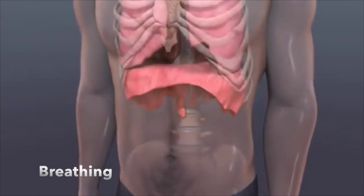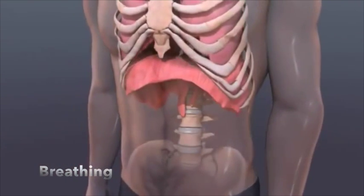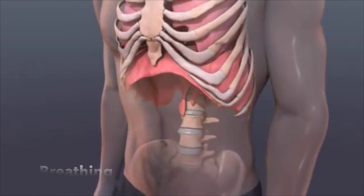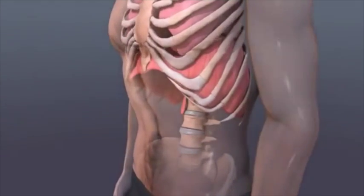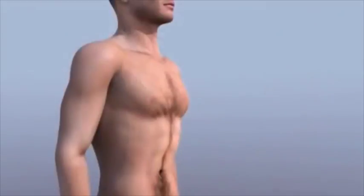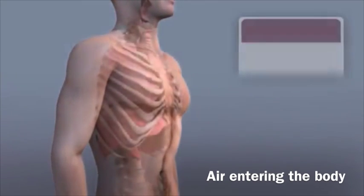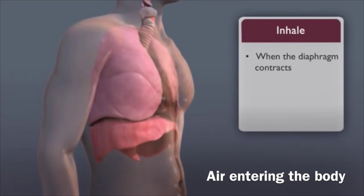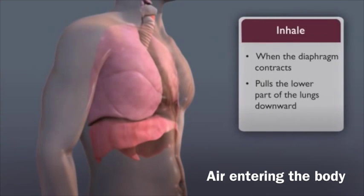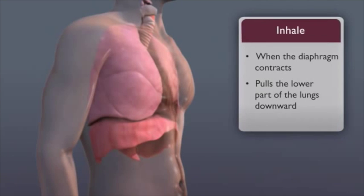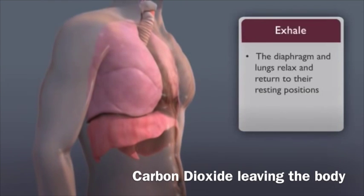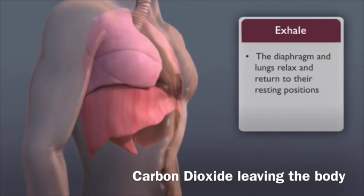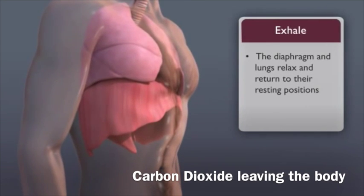The other way is by raising or lowering the ribs to increase or decrease the volume of the chest cavity. We breathe in, or inhale, when the diaphragm contracts. This pulls the lower part of the lungs downward. When we breathe out, or exhale, the diaphragm and lungs relax and return to their resting positions.